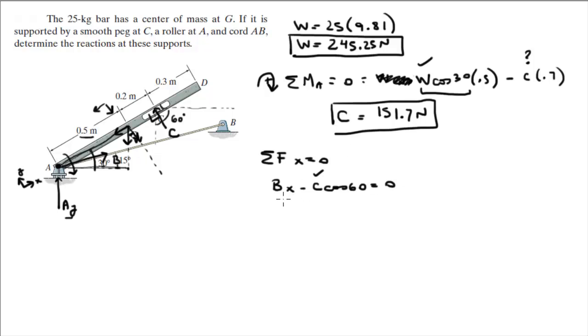And B_X, that means that B_X is equal to 75.9 newtons. Now, you know that B_X is only the X component of B. You know, B is going that way, so this will be B_X, and this will be Y. So, I just found B_X to be 75.9.